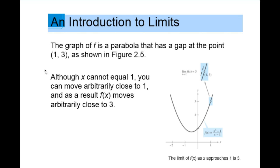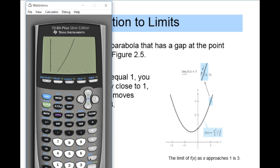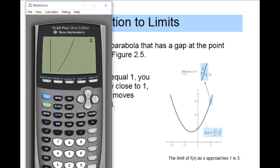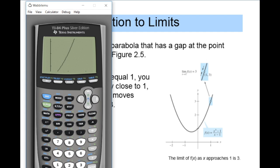Although x cannot equal one, you can move arbitrarily close to one, and f(x) moves arbitrarily close to three. If you actually graph this function on the calculator, you can see the function typed in and here's the graph. The problem is, even zoomed in, you can't see the hole at x = 1 where y = 3 — it looks like there's no hole at all. But when you go to the table of values, x = 1 is shown as undefined. So be careful using your calculator, because even though a value is undefined, the graph may look continuous due to the lack of pixel detail in the graphing calculator.